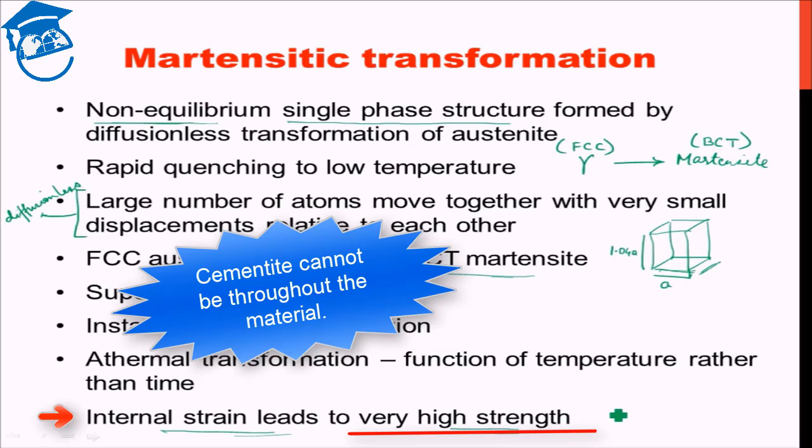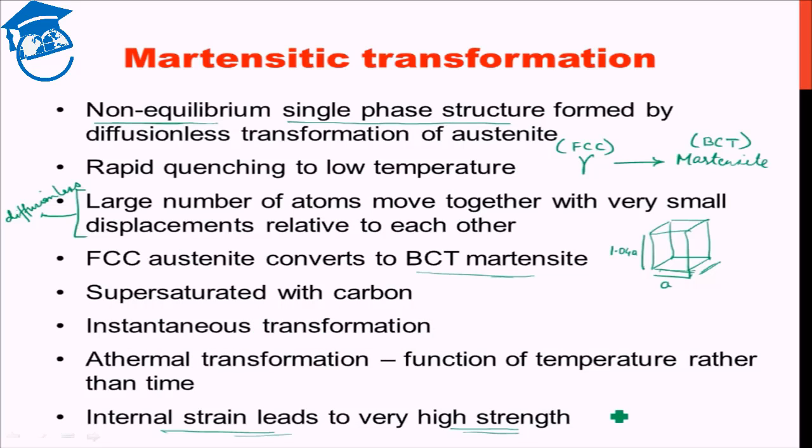This is the hardest phase that can be made out of steel. Cementite is a harder phase, but cementite cannot be throughout the material. It can be a portion of the material. If you want to convert the whole material into one phase, then martensite is the hardest phase possible.